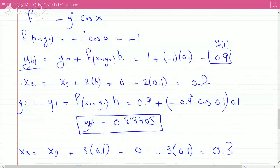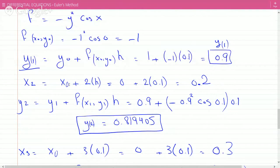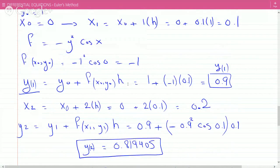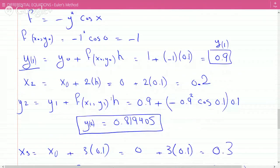To find y2, iterate using y1 plus the derivative evaluated at (x1, y1) times the step size. That's the derivative at (0.1, 0.9): -y² cos(x) = -(0.9)² cos(0.1) times 0.1, added to y1 = 0.9. So we get y2 = 0.819405.